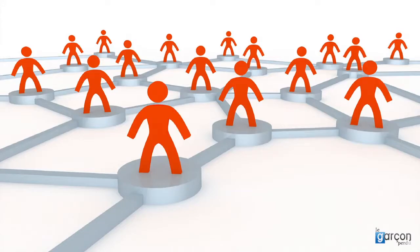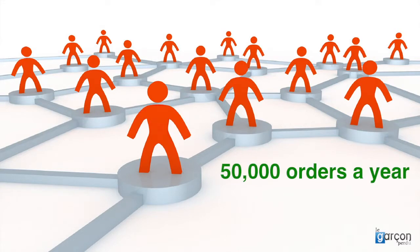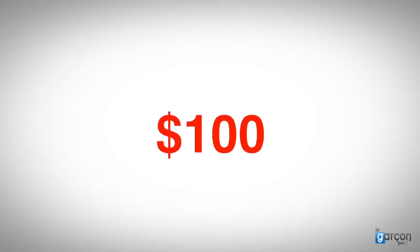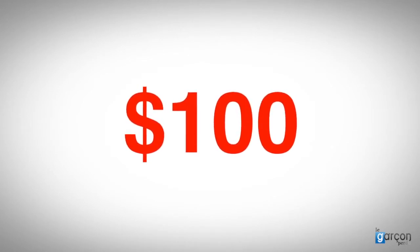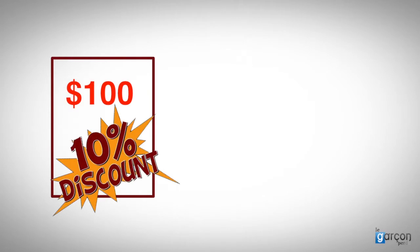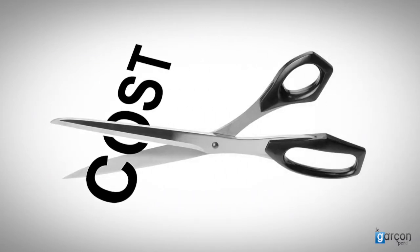I dealt with one organisation that raised more than 50,000 orders a year where the order value was less than $100. Most people calculate the cost of raising and paying a purchase order at around $100, depending on how the transaction is managed. So if Phil got a 10% discount on a $100 order, he would save $10. But if the transaction was managed more efficiently, we might be able to cut the transaction costs in half.